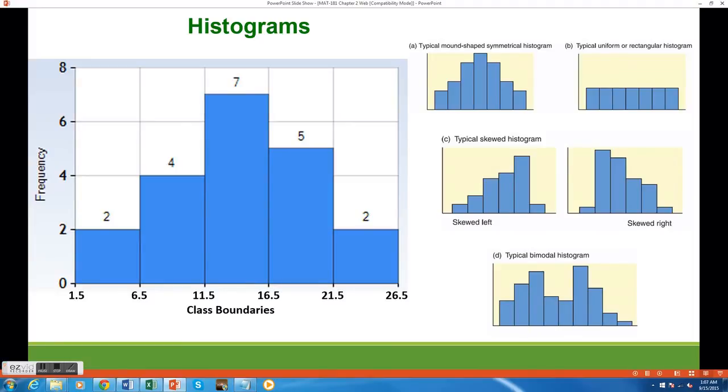A histogram gives us a good visualization of how our data is spread out. Here we have some nice symmetrical data, like in example A on the right. Mound-shaped symmetrical data is perfect for doing statistical analysis.